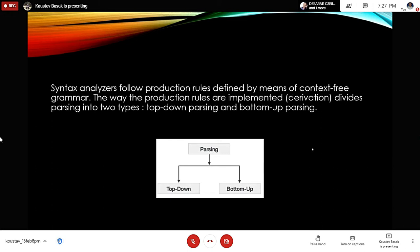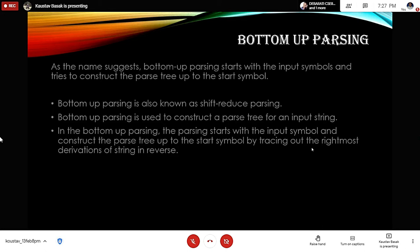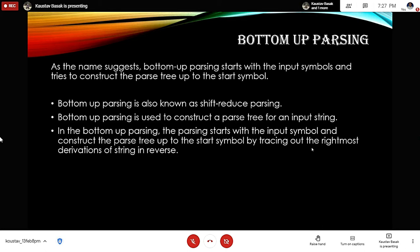The way production rules are implemented divides parsing into two types: top-down parsing and bottom-up parsing. Bottom-up parsing starts with the input symbols and tries to construct the parse tree in a bottom-up manner towards the start symbol. It is also known as shift-reduce parsing. The parsing starts with the input symbol and constructs the parse tree up to the start symbol by tracing out the rightmost derivation of the string in reverse order.